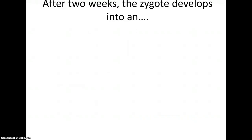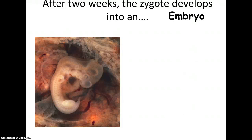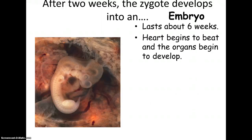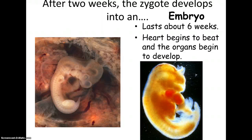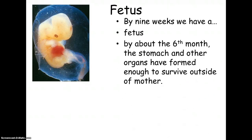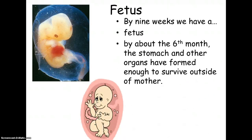After about two weeks, the zygote develops into an embryo, and this lasts about six weeks. This is where the heart is beating and organs begin to develop. By nine weeks, we have a fetus. By about the sixth month, the stomach is developed and other organs have formed enough to survive outside of the mother.